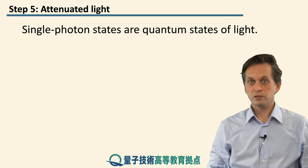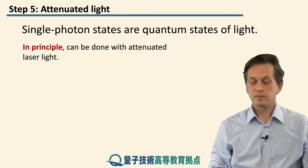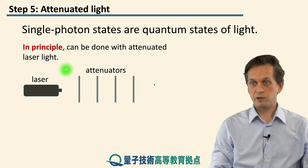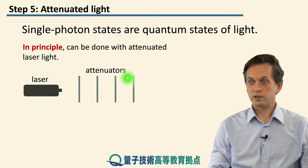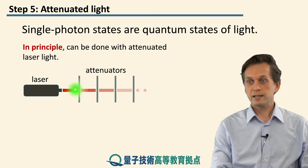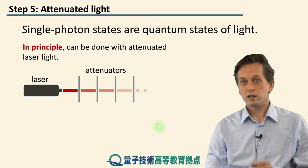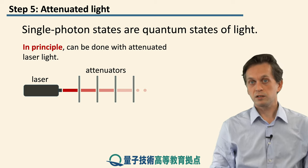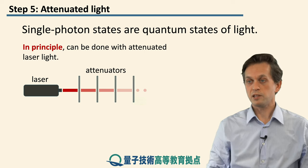One way of generating single photons is by using attenuated light. Consider the following scenario: you have your laser source and then a bunch of attenuator plates. You turn on your laser — it starts at some intensity — but as it passes through the attenuators, it loses its intensity until it's so faint that you truly get only single photons, represented by discrete dots after the last attenuator.